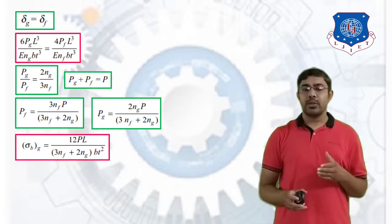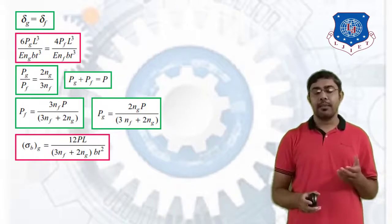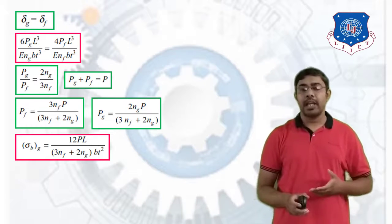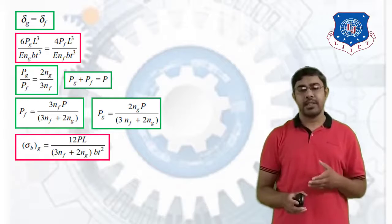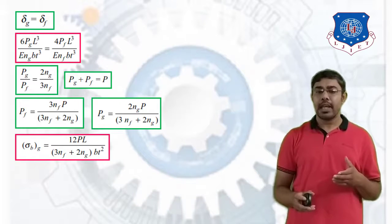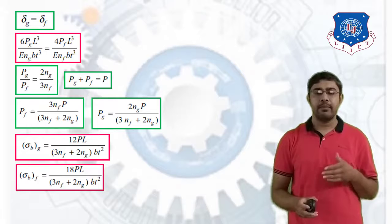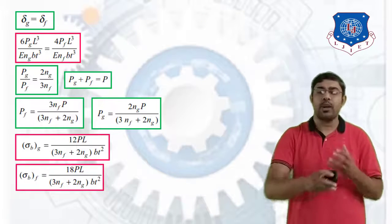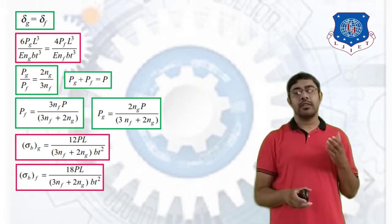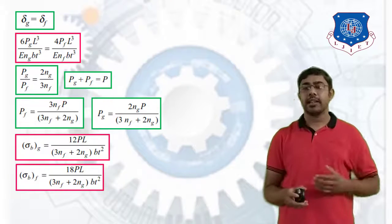Substituting the value of PG into the sigma_BG equation gives sigma_BG = 12·P·L / ((3·NF + 2·NG)·b·t²). Comparing sigma_BF and sigma_BG, we find sigma_BF = 18·P·L / ((3·NF + 2·NG)·b·t²). Therefore sigma_BF is approximately 1.5 times sigma_BG, meaning the stress in the extra full length leaves is higher than in the graduated length leaves.